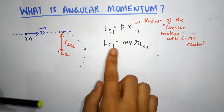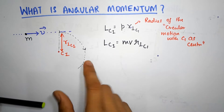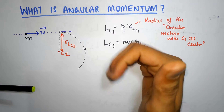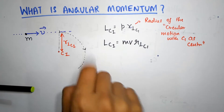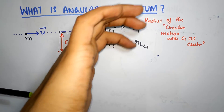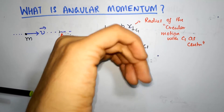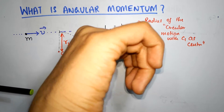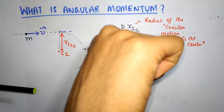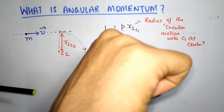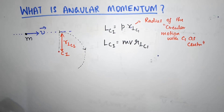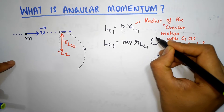Notice that this is a vector quantity and it should have some direction. The way we assign direction is using the right-hand rule. Anything that is circulating, we use the right-hand rule. Since it's going clockwise, we use our encircling fingers to show the direction of circular motion and the thumb then represents the angular momentum. In this case, the angular momentum is into the book.